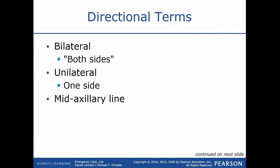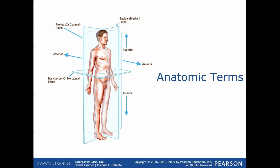Unilateral means one side. For example, if a patient only has unilateral chest rise, only one side of the chest is rising with each breath instead of both. That leads us to consider what's wrong with the opposite side — a tension pneumothorax, hemothorax, or flail segment, for instance. The mid-axillary line runs through the armpit along the side of the body, corresponding to the sagittal plane, splitting front from back.